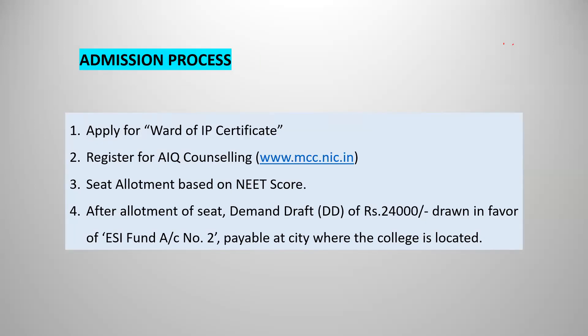The admission process steps are: first, apply for the ward of IP certificate. Second, register for All India ward quota counseling through www.mcc.nic.in. Third, seat allotment is based on NEET score — for ESIC eligible candidates, based on NEET score they will provide seat allotment in ESI Medical Colleges. Fourth, after allotment of seat, a Demand Draft for 24,000 rupees drawn in favor of ESI Fund, Account Number 2, payable at the city where the college is located — whichever city you receive your seat allotment, you have to take the demand draft of 24,000 rupees in that city's name.